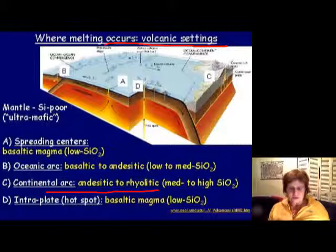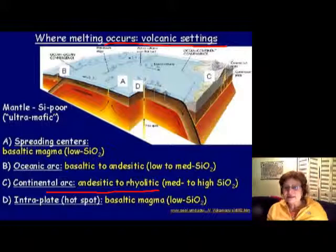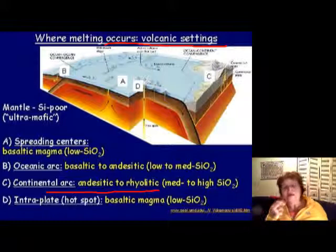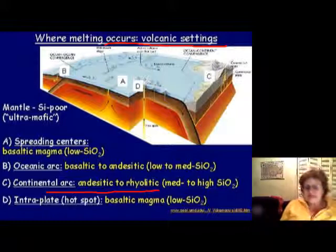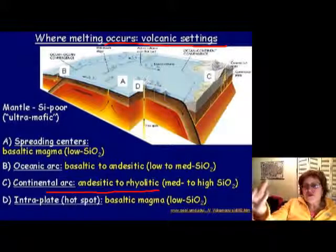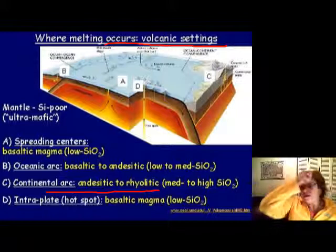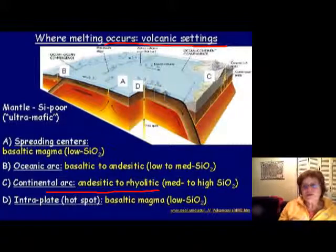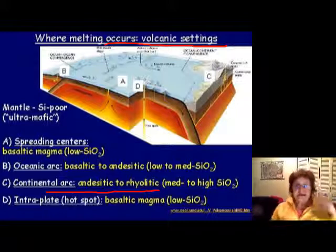At oceanic-continental plate boundaries you get andesitic to rhyolitic volcanoes like Mount St. Helens. Under continental hotspots you get supervolcanoes, because the magma has to melt through the continental crust, making it extremely felsic and extremely explosive.